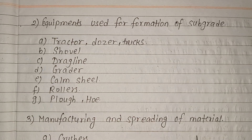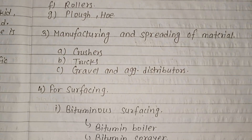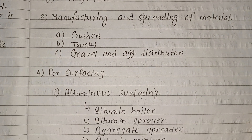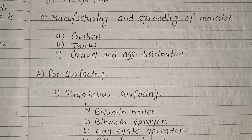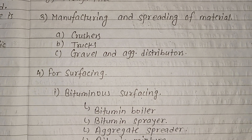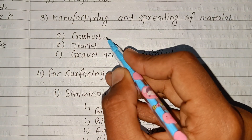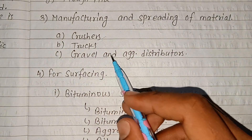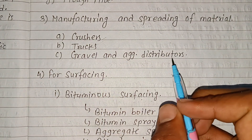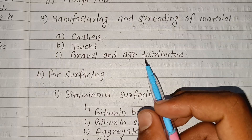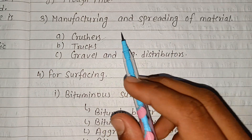For subgrade manufacturing and spreading of materials: material manufacture, spreader, crusher, truck, gravel, aggregate, and distributor are required.